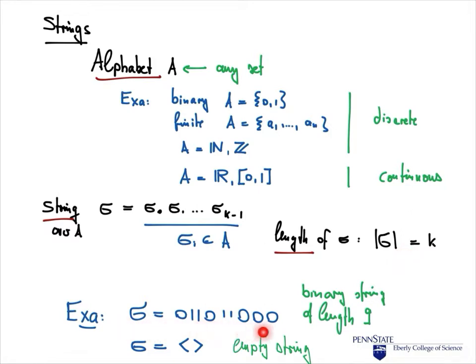For example, here we have a binary string that has nine symbols in it, so it has length 9. We also have the empty string, which we denote by a special symbol — that's just the unique string of length 0.